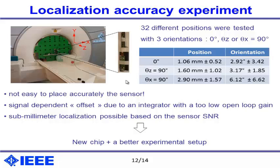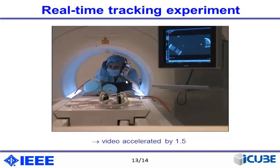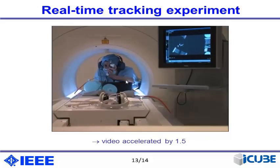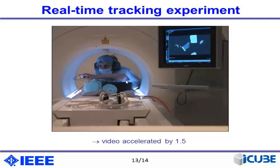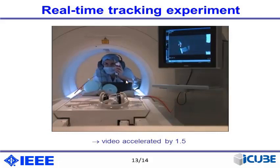Looking only at the output noise of the sensor and the signal-to-noise ratio, we estimate we should achieve 7mm localization accuracy, which is the target. We were also able to perform real-time tracking — this was done last week. You can see our colleague moving the device slowly, with both passive markers visible on the MRI image. The video is accelerated by 50%, and after a slow movement she performs a fast movement, and you can see we maintain both markers on the image, demonstrating successful real-time tracking.